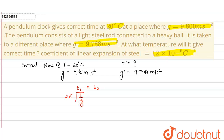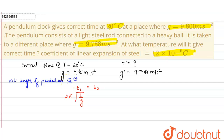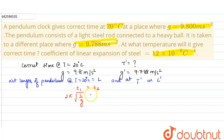Let us suppose that the length of the pendulum clock at t = 20 degrees Celsius is l, and at the temperature t' in the new place it is l'. The time period in the first place is 2π√(l/g) and the time period in the new place is 2π√(l'/g').